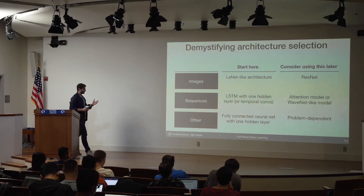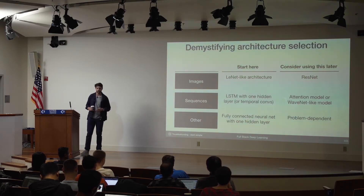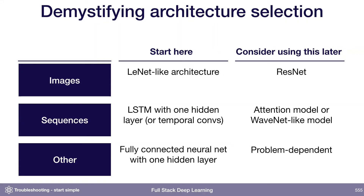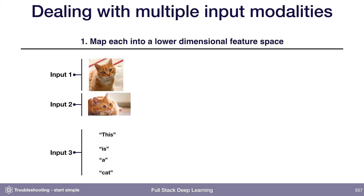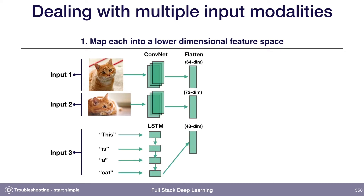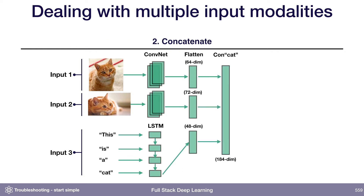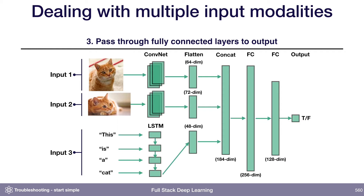A lot of our data doesn't look like just one of these things — it contains multiple modalities. So how do you deal with multiple input modalities into a neural network? The strategy I recommend is to start by mapping each input modality into a lower-dimensional space. For images, pass them through a ConvNet; for sequences or sentences, pass them through an LSTM. Then take the outputs of those networks, flatten them to get a single vector for each input, concatenate those vectors, and pass them through some fully connected layers to an output.